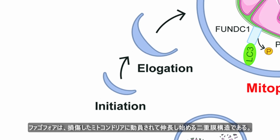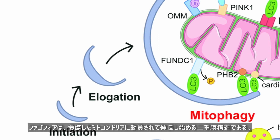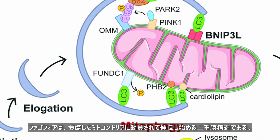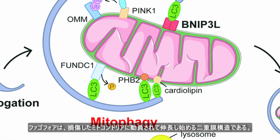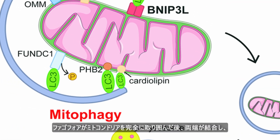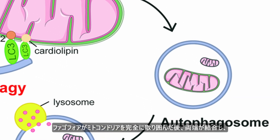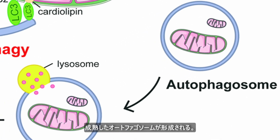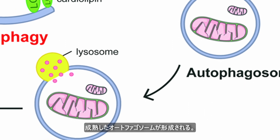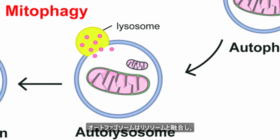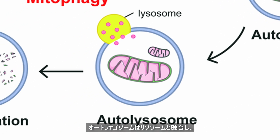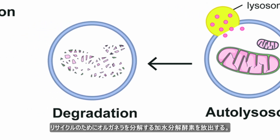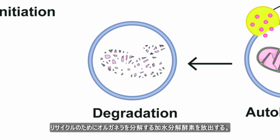The phagophore is a double membrane structure that is recruited to the damaged mitochondrion and undergoes initiation and elongation. After the phagophore completely surrounds the mitochondrion, the edges seal together, forming a mature autophagosome. The autophagosome then fuses with a lysosome, which releases hydrolases that degrade the organelle.